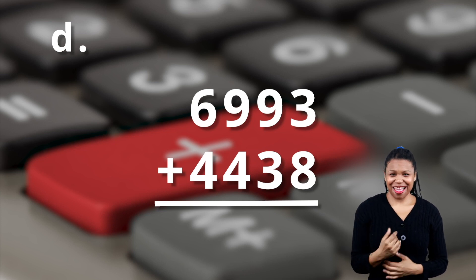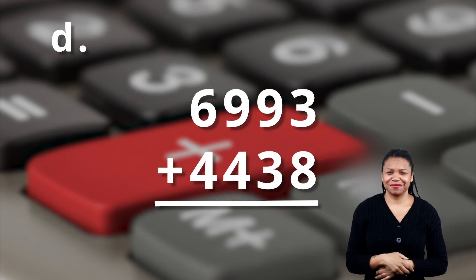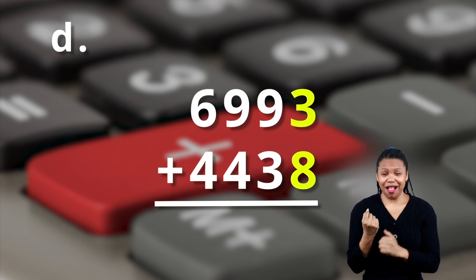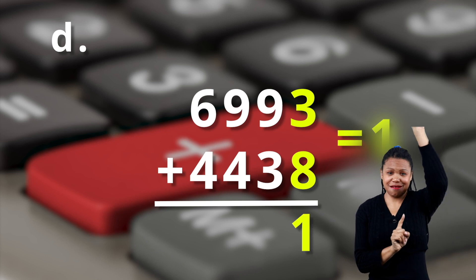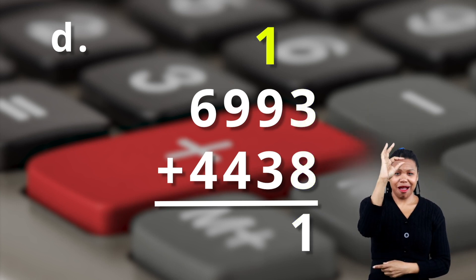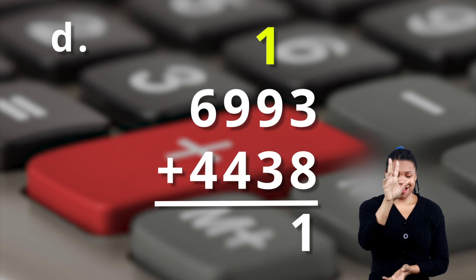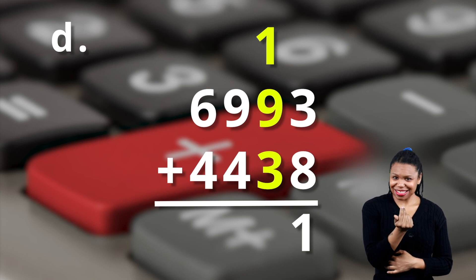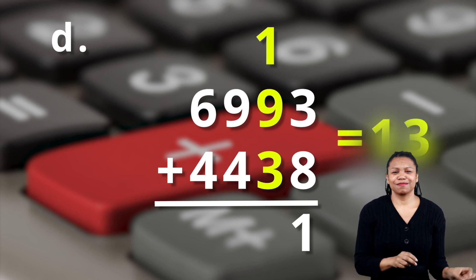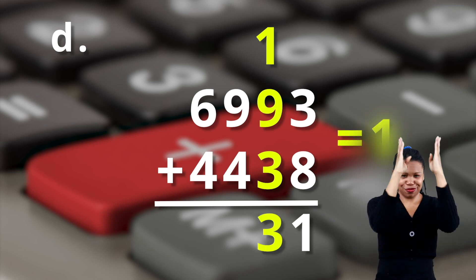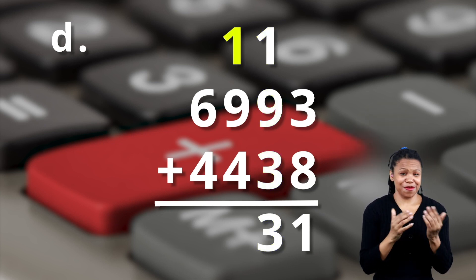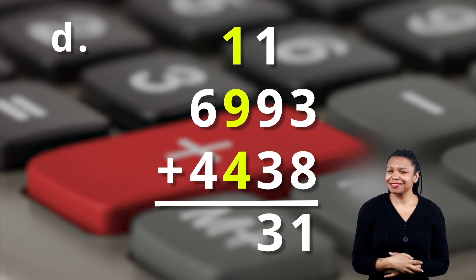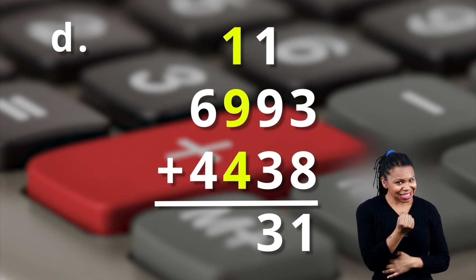Welcome back. Here we go. Sixty-nine ninety-three plus forty-four thirty-eight. So you've got the three plus the eight is eleven. So a one goes down in the ones column. Carry the one up to the tens column. So you have one plus nine plus three. What is that? Yep, that is thirteen. So a three goes down and a one goes up into the hundreds column.